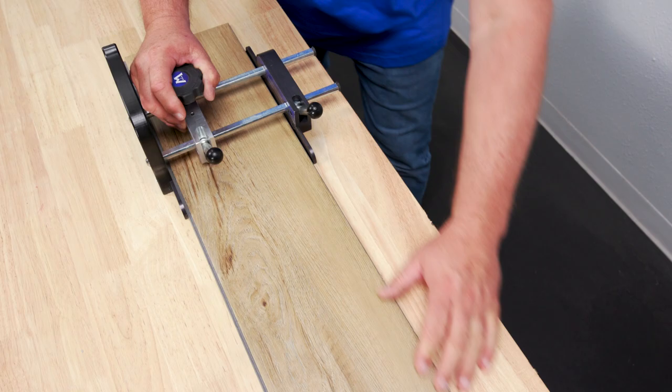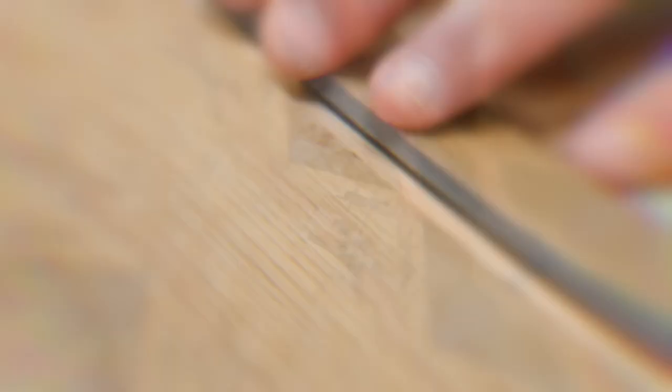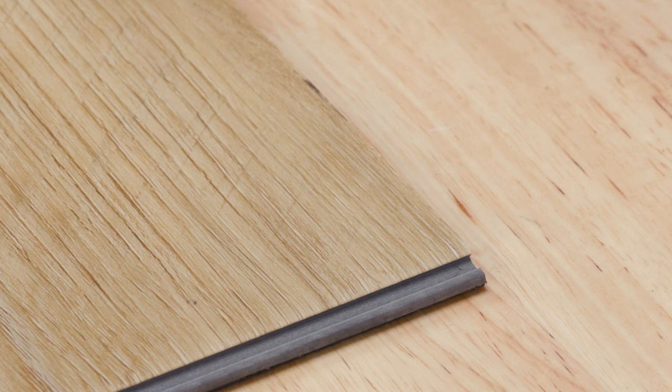If the flooring doesn't snap easily, adjust the scoring blade down slightly and rip it several more times.